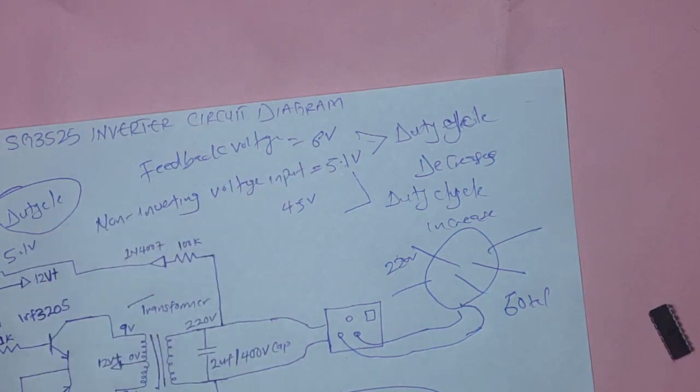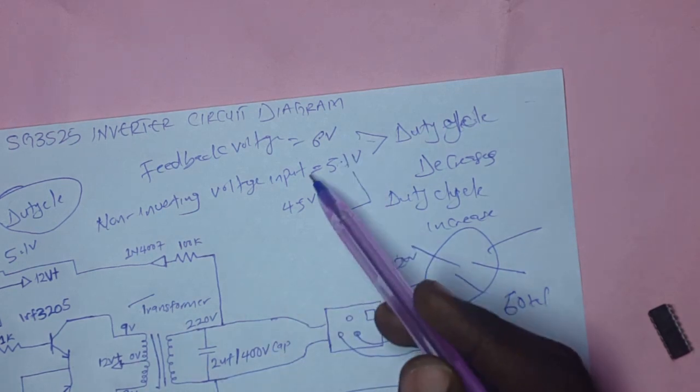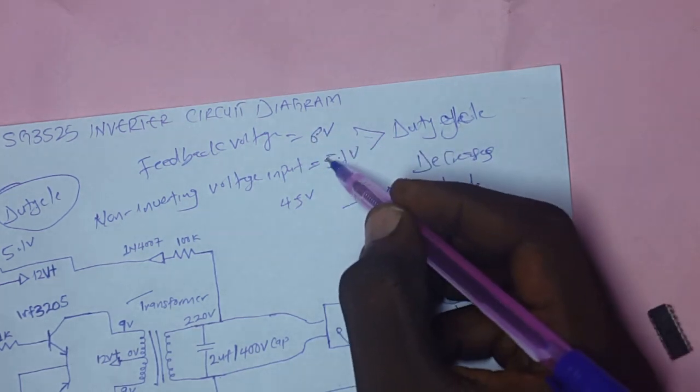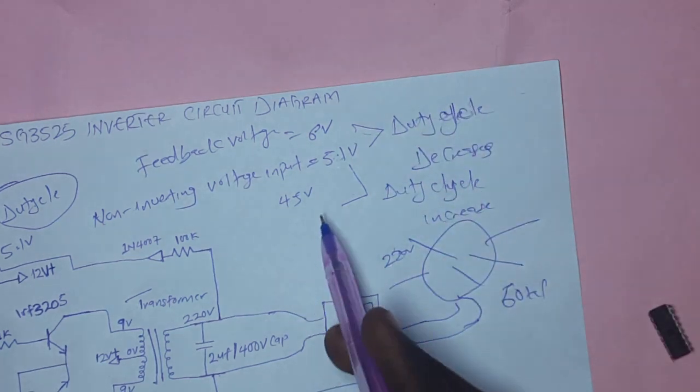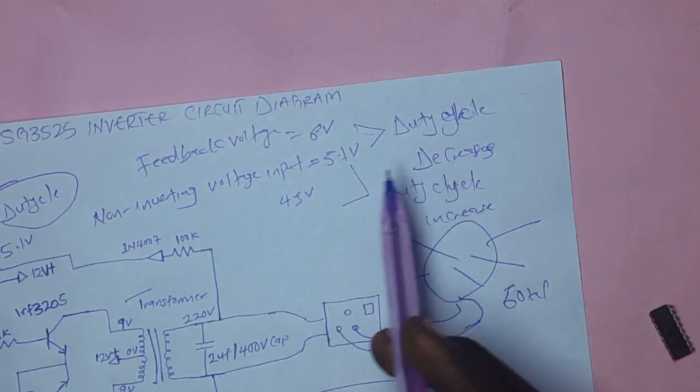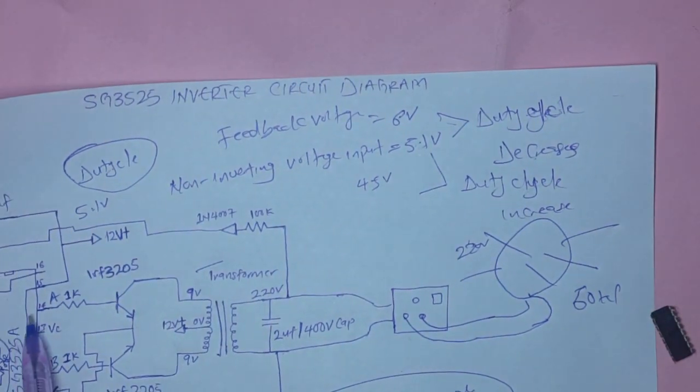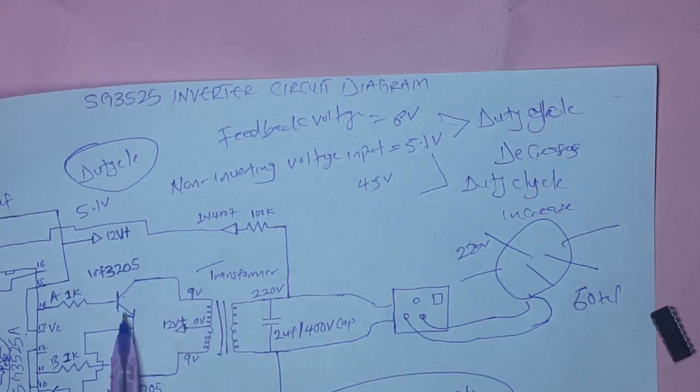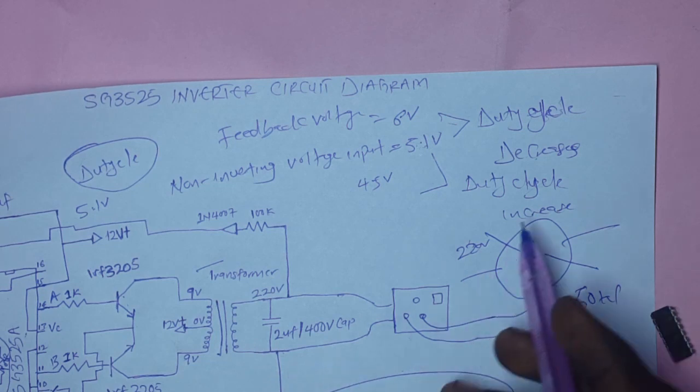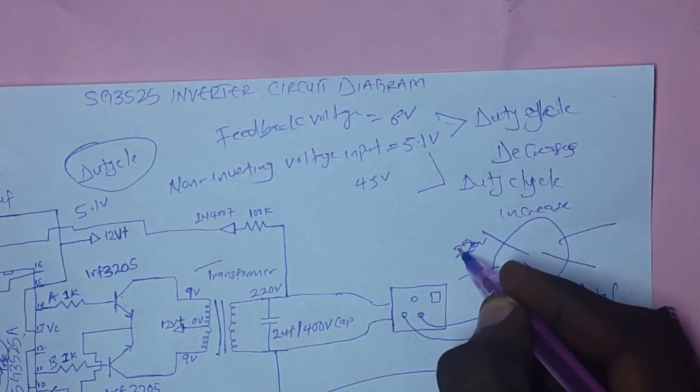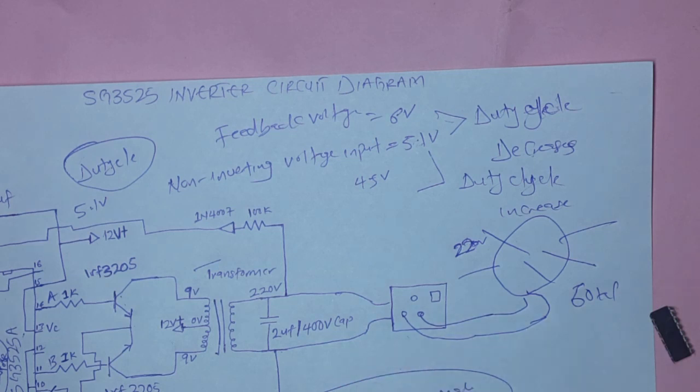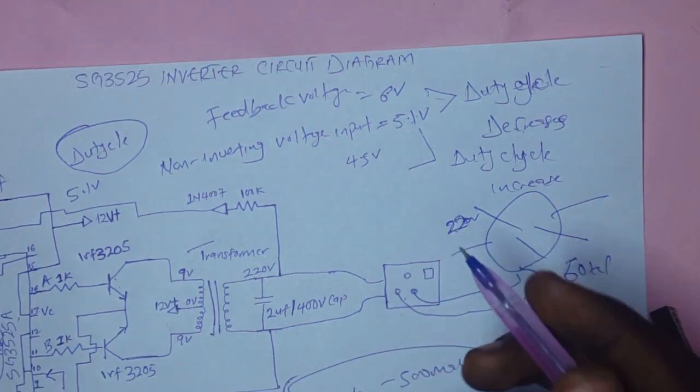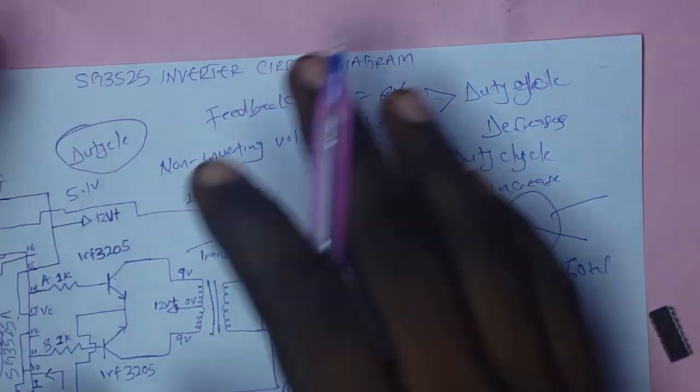When the feedback voltage drops below 4.5 volts, below this 5.1 volts, then the duty cycle will increase, which will let the IC pump more current into the base of the transistor to amplify more power for this transformer to maintain these 220 volts. It does this process as fast as possible without you even knowing. That is how this feedback thing works.